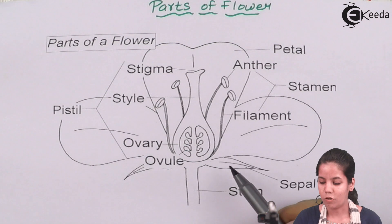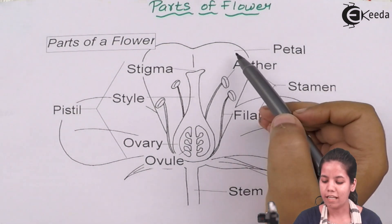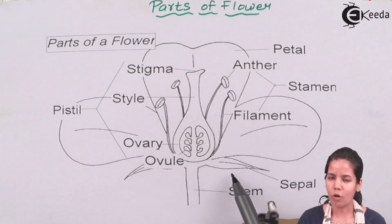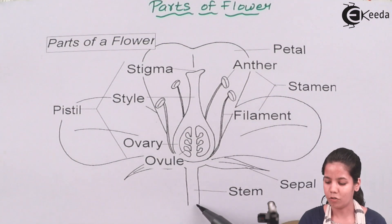This is the structure of flower as you can see. These are petals, or you can say corolla. These are sepals which are also called as calyx, and this is the stem region.